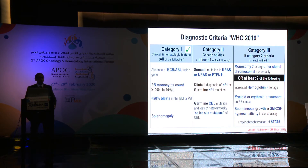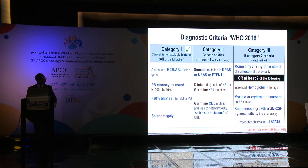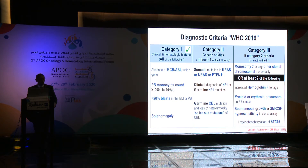The WHO 2016 diagnostic criteria include Category 1, where all features must be present to suspect JMML: absence of BCR-ABL fusion gene, peripheral blood monocytes greater than 1,000 with blasts less than 20% in peripheral blood and bone marrow, and splenomegaly. Category 2 requires only one of the following: somatic mutation in KRAS, NRAS, or PTPN11; clinical diagnosis of NF1; or germline CBL mutation.